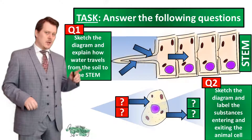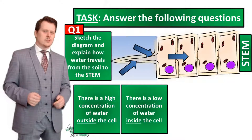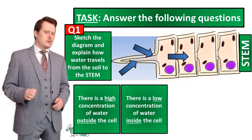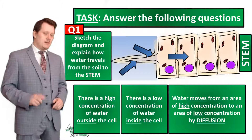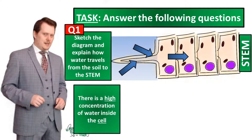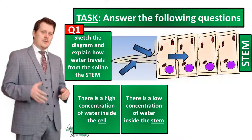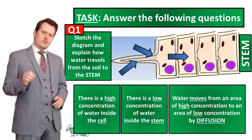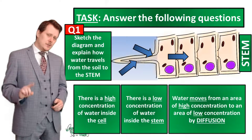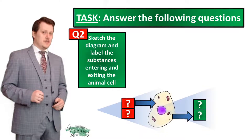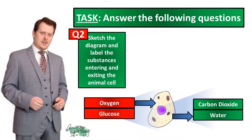Let's go through the answers. First, establish the concentration gradient: there is a high concentration of water outside the cell and a low concentration of water inside the cell. Water moves from high concentration to low concentration down its concentration gradient by diffusion. But we're not at the stem yet — once water has entered the cell, there is a high concentration of water inside the cell and a low concentration inside the stem. Water moves from high to low concentration by diffusion into the stem. For the second question, the substances diffusing into the animal cell are oxygen and glucose, and the substances diffusing out are carbon dioxide and water.